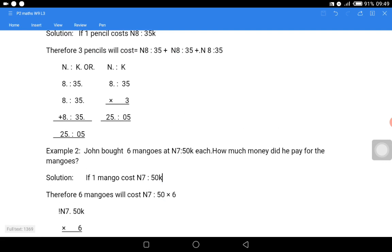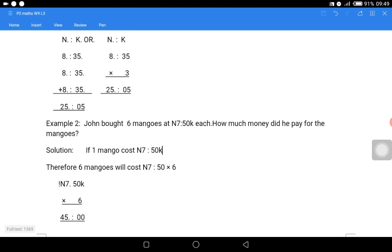Now let us make use of our repeated addition to check whether our multiplication is correct. N8.35k + N8.35k gives us N16.70k. N16.70k + N8.35k gives us N25.05k, which shows that the answer we arrived at under the multiplication method is correct.